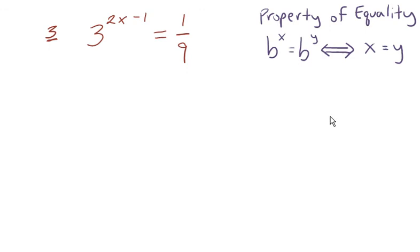We're hoping to use our property of equality, so we want to ensure that we have like bases. On the left-hand side, we have a base of 3. And on the right-hand side, we notice that the denominator of the fraction can be written as a power of 3. 9 can be written as 3 squared.